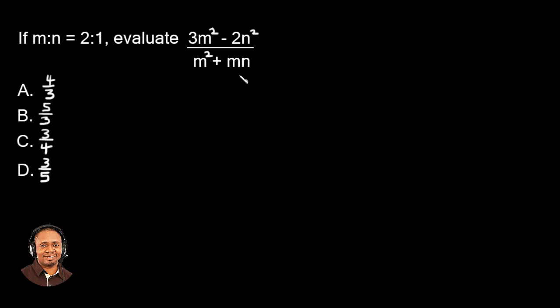So what comes to your mind? The first statement we see is m ratio n equals 2 ratio 1. We are going to use the value given on the right hand side to represent the letters given on the left hand side. That is, 2 will represent m and 1 will represent n in this evaluation.